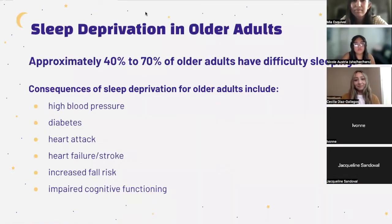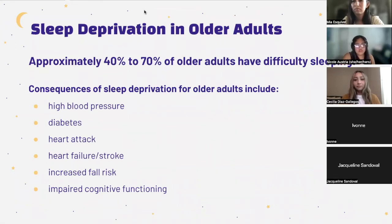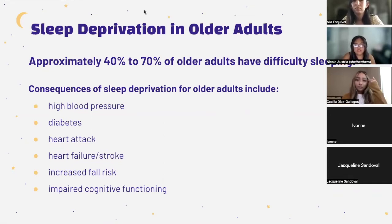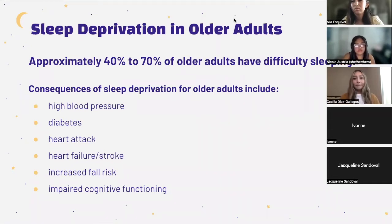I'll be discussing sleep deprivation in older adults. Someone in the chat asked: what is an older adult? Older adults are usually classified as ages 60 and older. Older adults have significantly higher rates of sleep difficulty than younger age groups — it's estimated that about 40 to 70 percent of older adults have problems sleeping. Many of these changes occur due to changes in the body's internal clock. Changes in production of hormones such as melatonin and cortisol may also play a role in disrupted sleep in older adults.